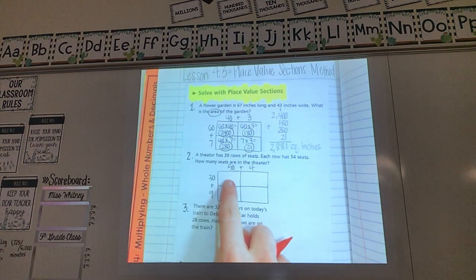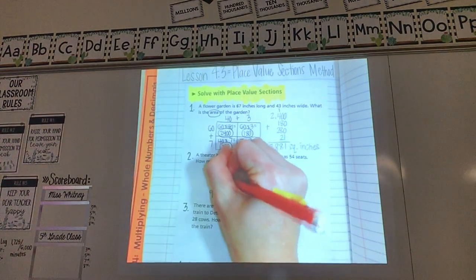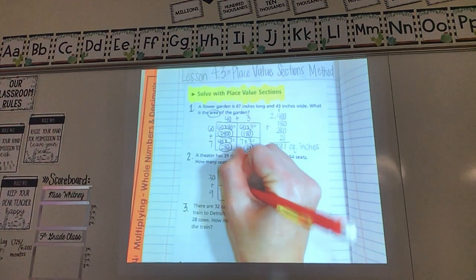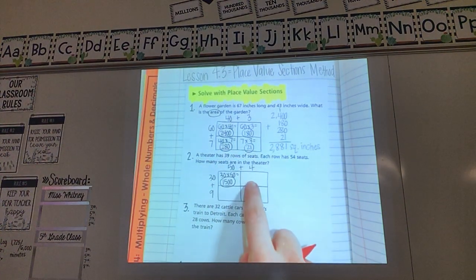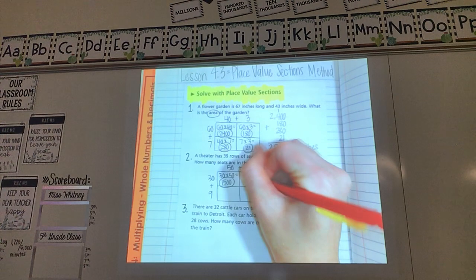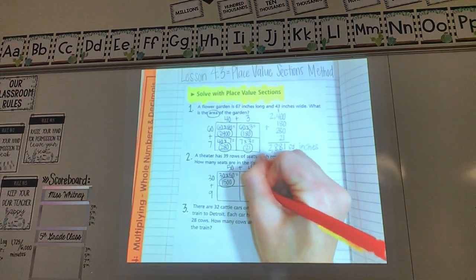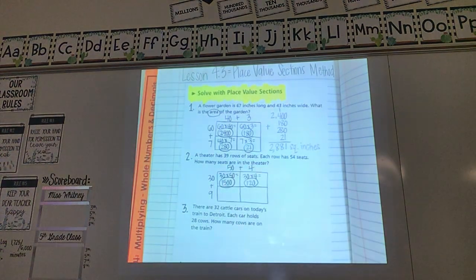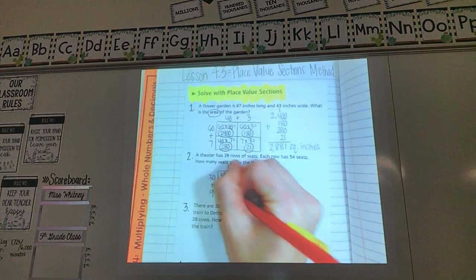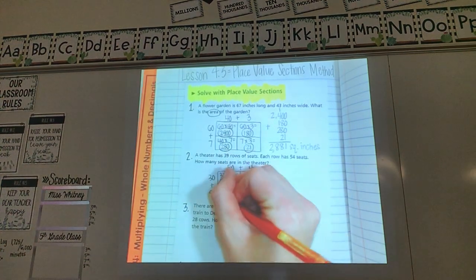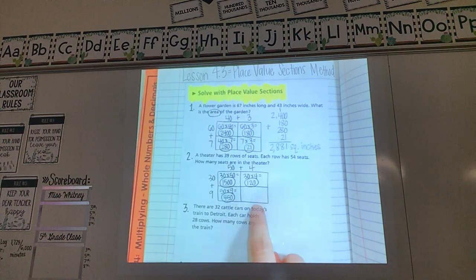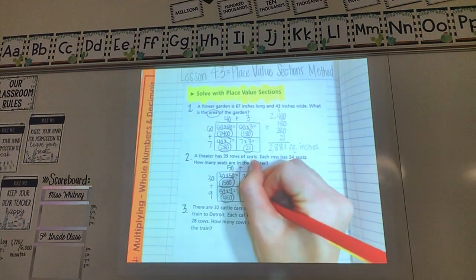Draw that line. And then I'm ready to work in each one of my boxes. This box right here. What two things would I multiply? 30 times 50. Using my zeros trick. 3 times 5 is 15. Add two zeros. Go to my next box. What two things am I multiplying in this box? 30 times 4. 3 times 4 is 12 with one zero. So 120. Go down to this box. What two things am I multiplying down here? 50 times 9. Using my zeros trick. 9 times 5 is 45 with one zero. So 450. And my final box back here would be for 9 times 4. 9 times 4 is 36.